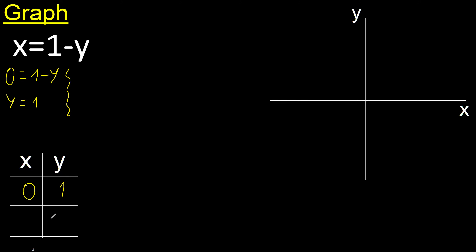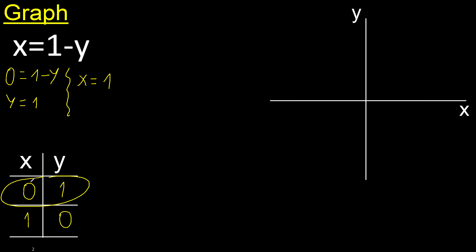Here any number or here any number. For example, y is 0. Therefore x equals 1 minus 0, which is 1. Here x is 0, therefore in y, y is 1. Negative, positive — 1 is here, point in y because x is 0.